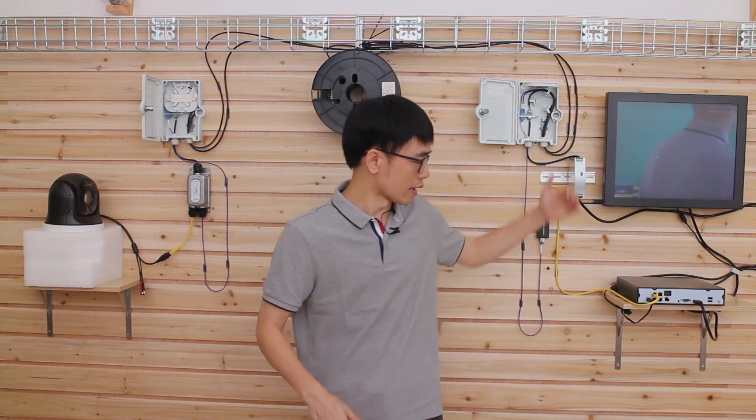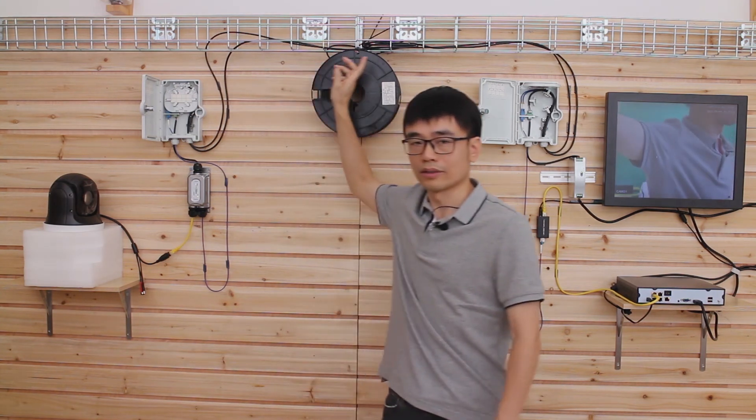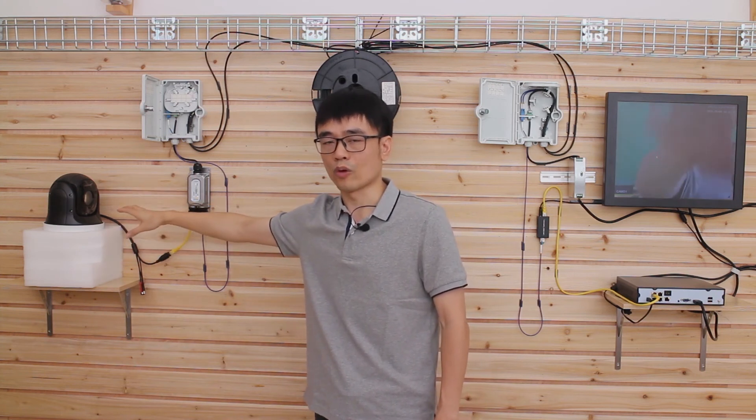There remains one question: What is the maximum distance between the NVR and the outdoor media converter? It can be up to 3000 feet. It depends on what kind of power cord you use and what the maximum power consumption is on your IP camera or IP device.